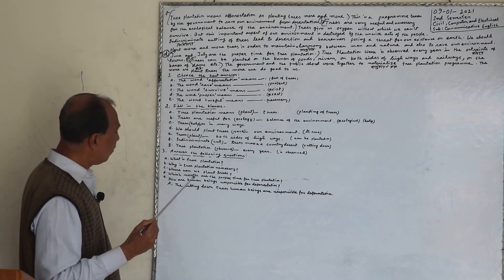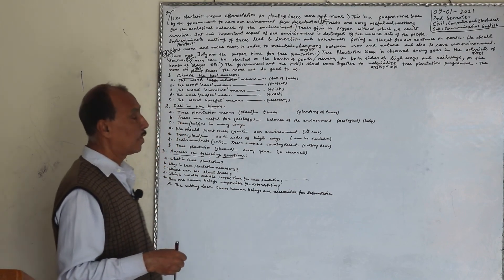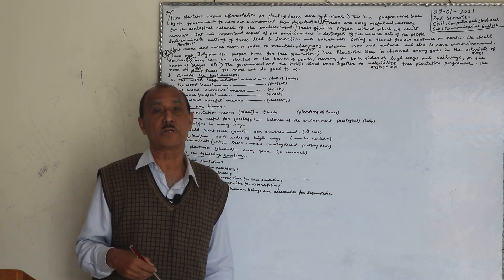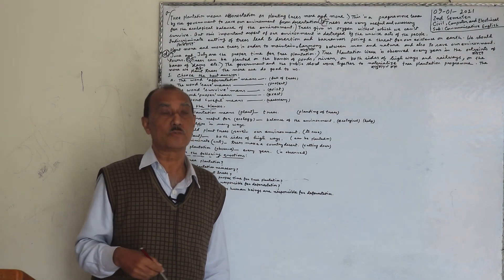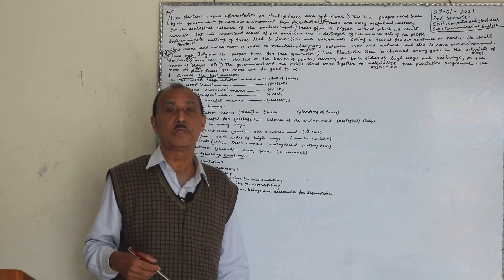D, which months are the proper time for tree plantation? Kone-kone maash gaspala rupon karar upujukta shamaay. June and July are the proper time for tree plantation.